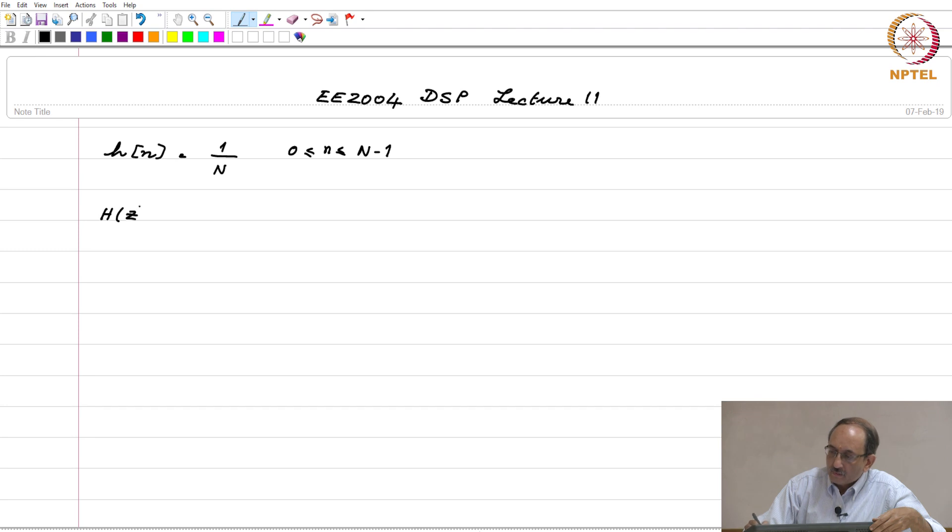Then the corresponding h of z, if you apply the straightforward definition, is 1 plus z inverse plus z power minus 2 all the way up to z power minus n minus 1. This can be written as 1 over n times 1 minus z to the minus cap N by 1 minus z inverse.